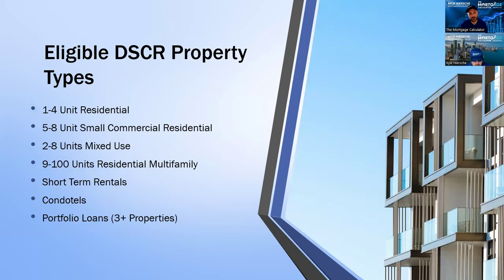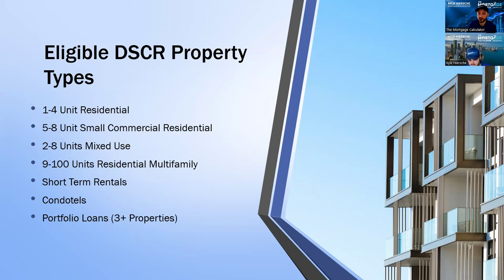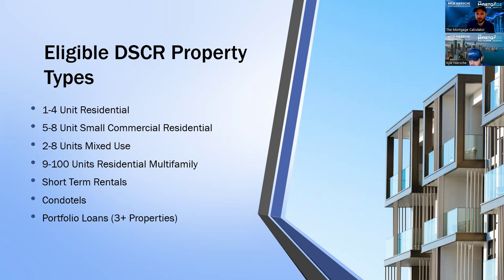What types of properties can we do under our typical DSCR loans? We can do one to four unit residential, five to eight units as small commercial residential — anything over four units is technically commercial but we have this hybrid product for five to eight units. Same thing with two to eight unit mixed use — treated as a standard DSCR loan under a couple of programs. For large multifamily or large mixed-use, nine to a hundred units or more, we use our standard commercial-type programs. We also do short-term rentals, condo-tels, and portfolio loans under DSCR. If multiple properties don't meet the standard minimum, you can combine them into a portfolio DSCR loan.